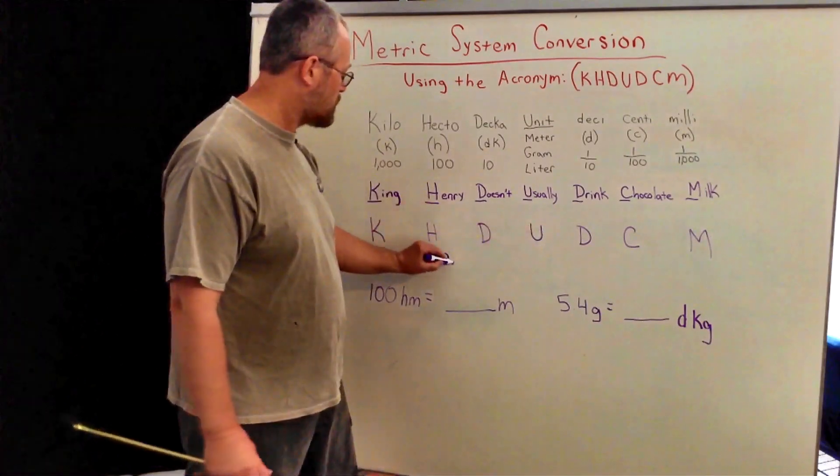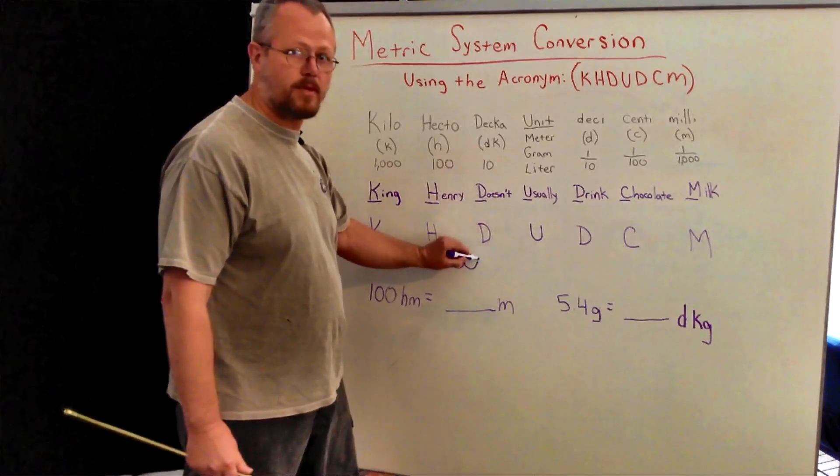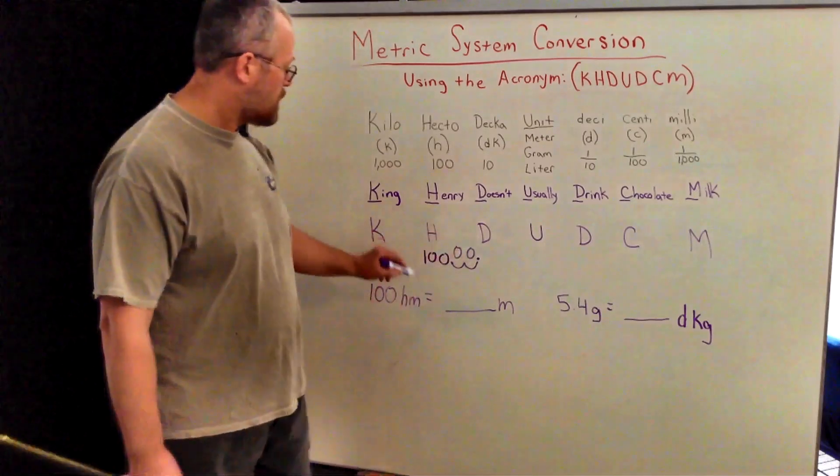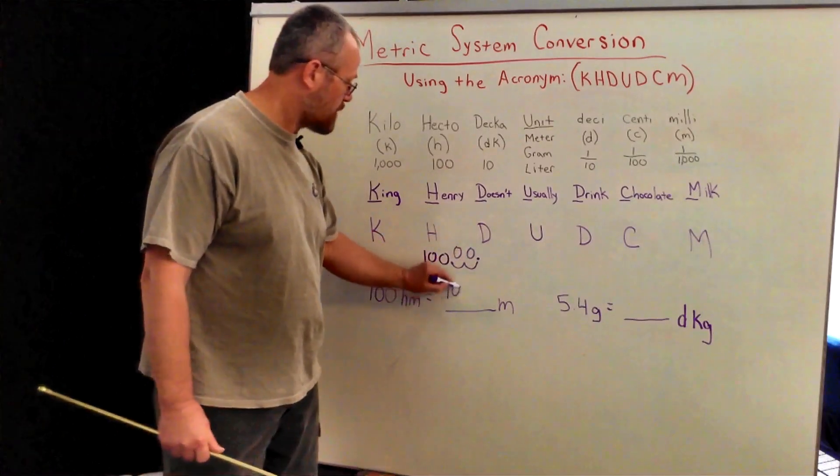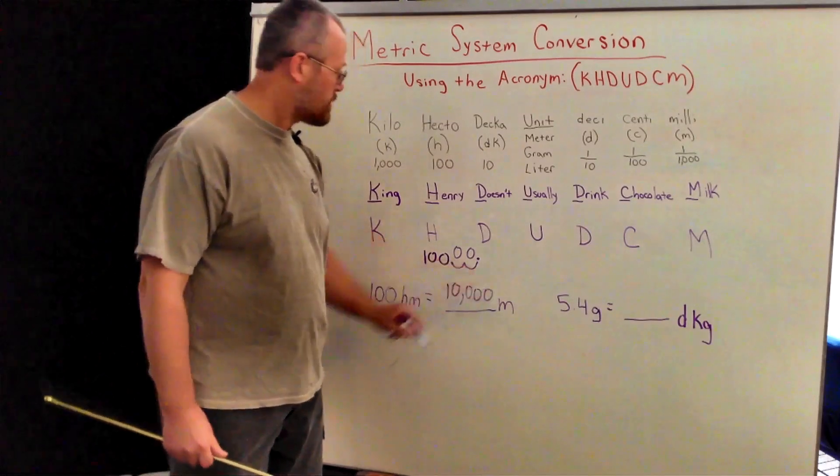So all we do is move the decimal point two spots. Get the decimal point there, and put your zeros in there. And our answer is 10,000 meters.